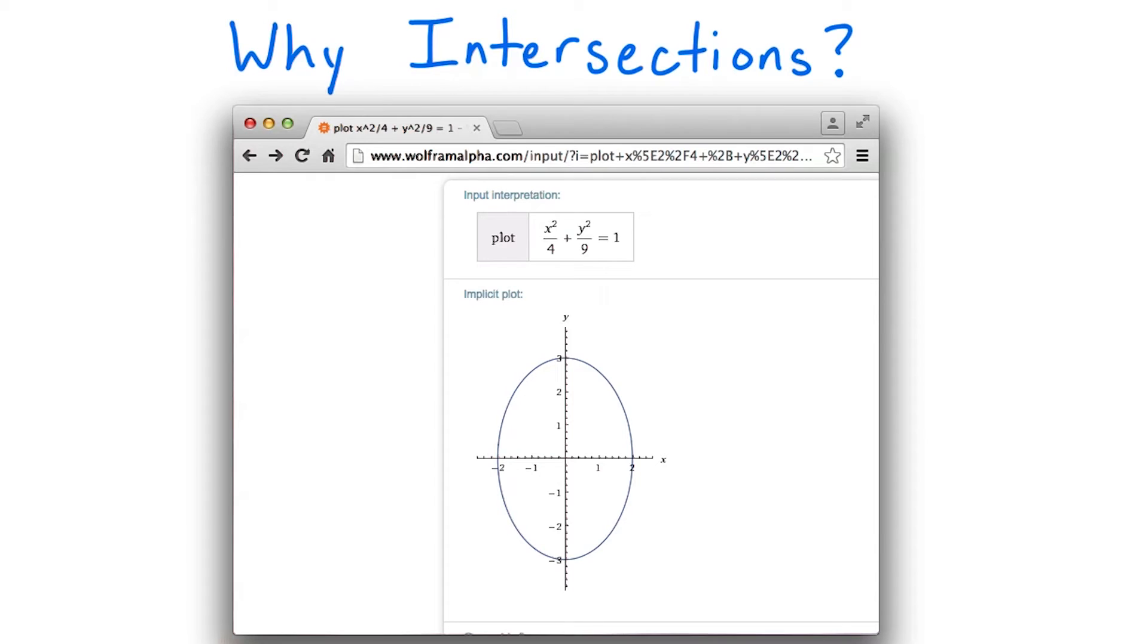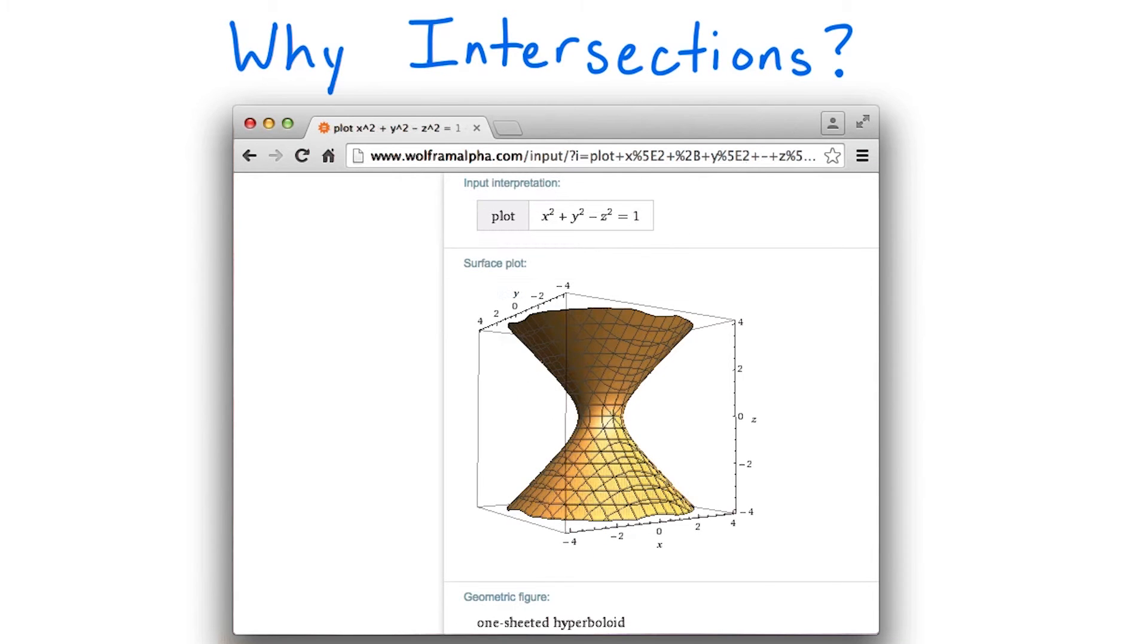For example, this ellipse in the plane is the set of all points that satisfy the equation (1/4)x² + (1/9)y² = 1. And this shape in three dimensions, called a hyperboloid, is the set of all points satisfying the equation x² + y² - z² = 1.